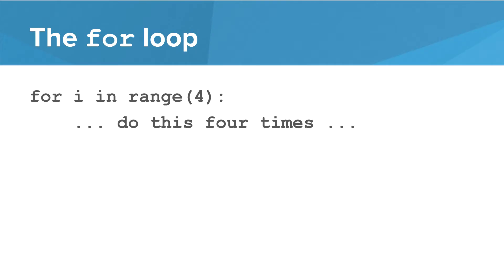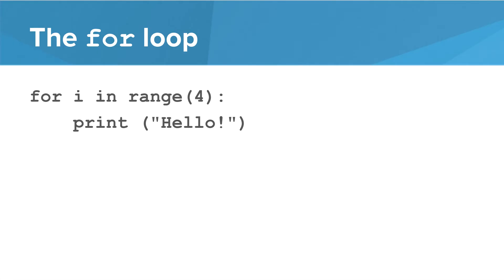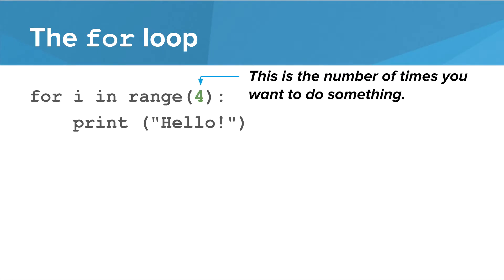A for loop looks like this. You say for i in range, and then some number in parentheses, and then the body of that loop contains code that will repeat that number of times. As we saw, this prints hello four times. The thing in parentheses just has to be something that evaluates to an integer — it represents the number of times you want to do something. And of course, everything in the body is indented by one level.